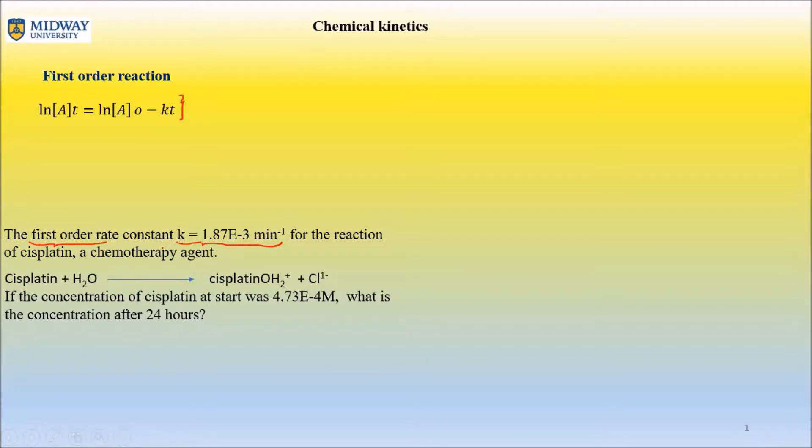So what is this question telling you? The first order rate constant is this. So we know K value for cisplatin. Cisplatin, I believe is platinum dichlorodiamino. It's been a while after refreshment in organic chemistry, but cisplatin, this is a reaction. And if the concentration of cisplatin at start was this molar, what is the concentration after 24 hours?